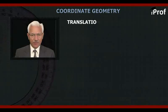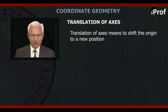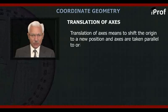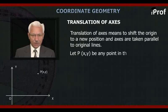Translation of axes. Translation of axes means to shift the origin to a new position and the axes are taken parallel to the original lines. Let P(x,y) be any point in the original axes.